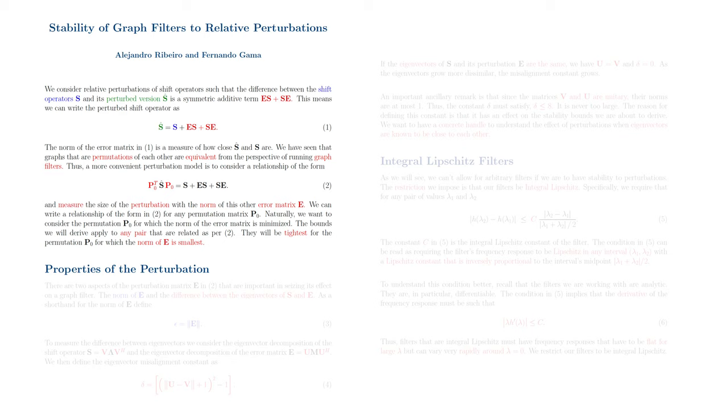Let's study some properties of the perturbation. There are two aspects of the perturbation matrix E in equation 2 that are important in seizing its effect on a graph filter: the norm of E and the difference between the eigenvectors of S and E. As a shorthand for the norm of E, we define the constant epsilon.